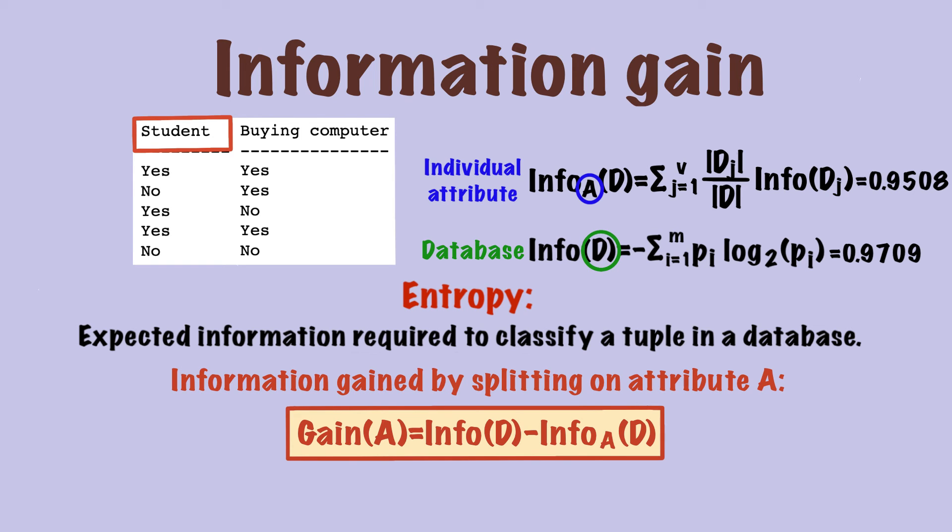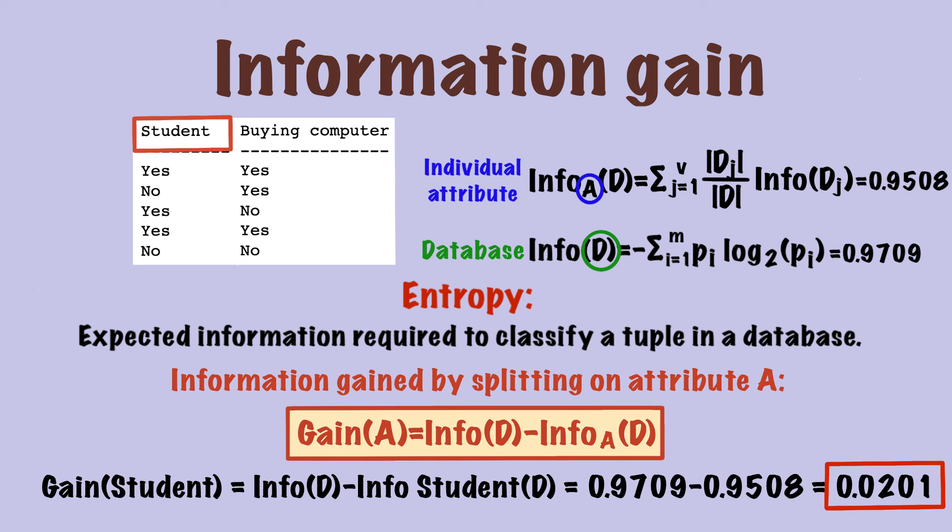Consequently, the information gained by splitting on attribute A is the entropy of database minus the entropy of individual attribute. The concept is actually intuitive because the information you get is the reduction of the amount of information required after splitting on an attribute. Thus, the information gain of attribute student is 0.9709 minus 0.9508, which is 0.0201.